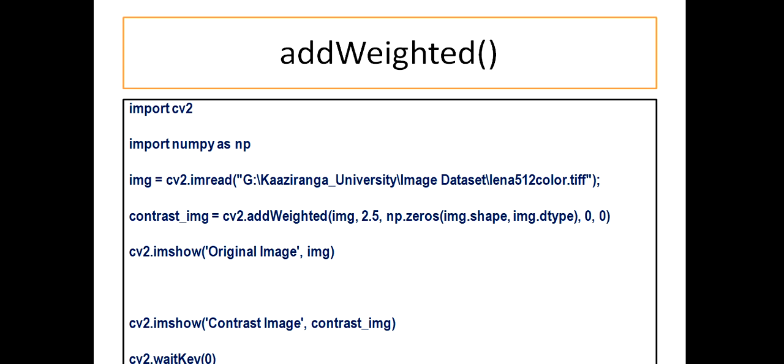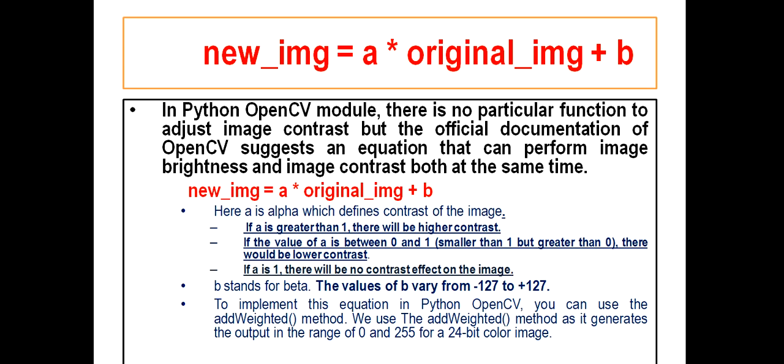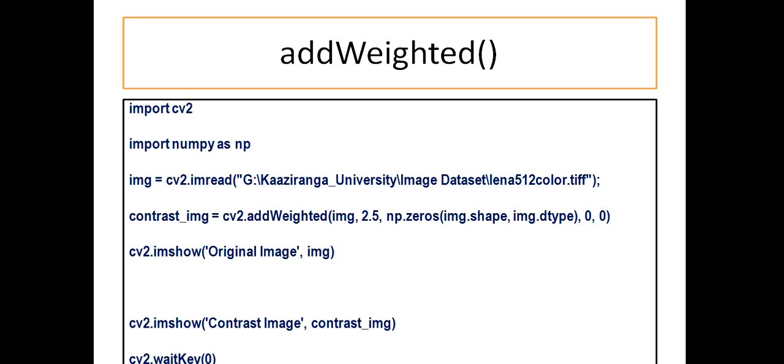Then contrast_img, I have given the variable name as contrast_img is equal to cv2.addWeighted. This is the original image, img, 2.5 alpha value. Then np.zeros, the second image is filled, meaning we have created an array to fill with zeros. The shape size dimensions are taken from this image, img.shape. We discussed this shape function in the last class. Then img.dtype. You can go through the syntax and match with the values alpha2 and beta2. Then cv2.imshow 'Original Image', img. Original image will be shown. Then cv2.imshow 'Contrast Image', contrast_img. The contrast improved image will be shown. cv2.waitKey(0). With that, we will perform this experiment.